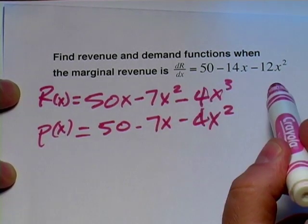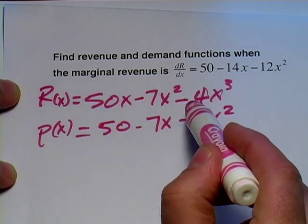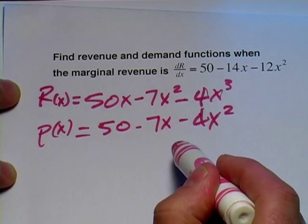All we did was take the antiderivative to get the revenue function and then divide everything by x to get the demand function.